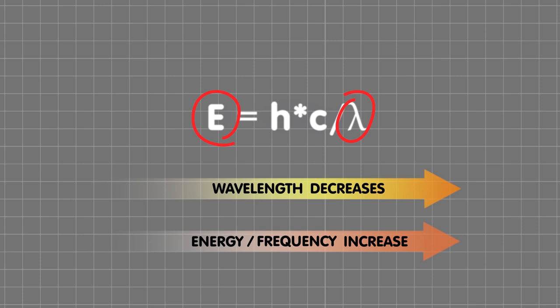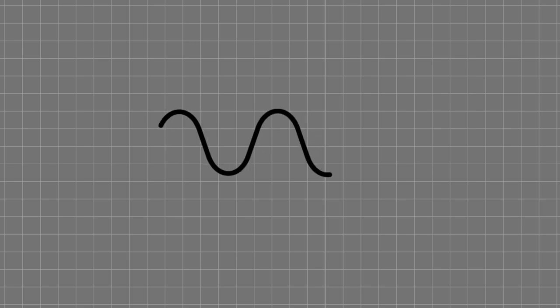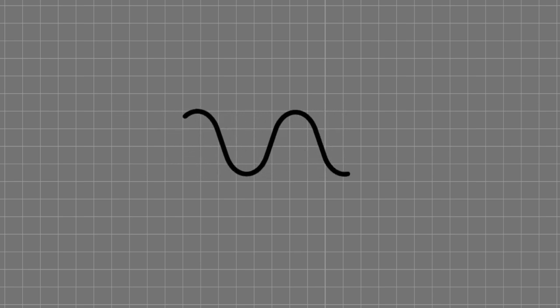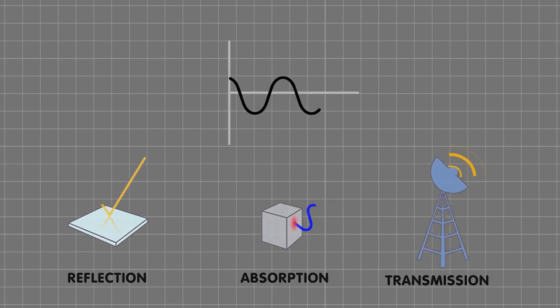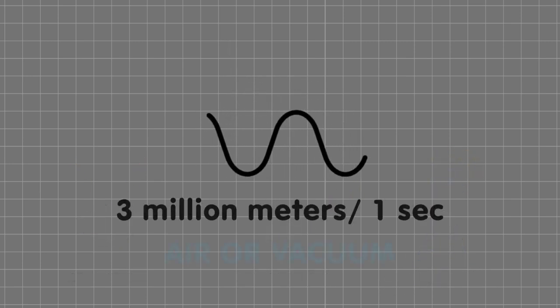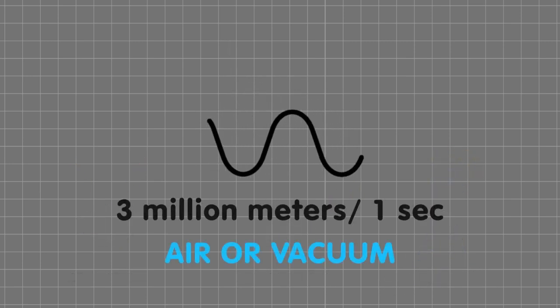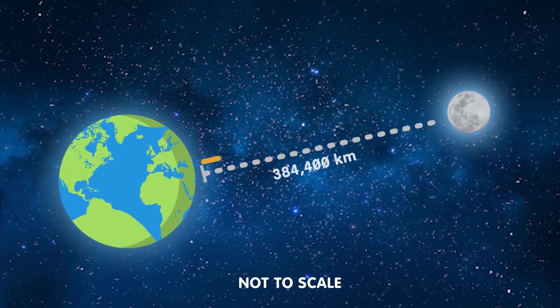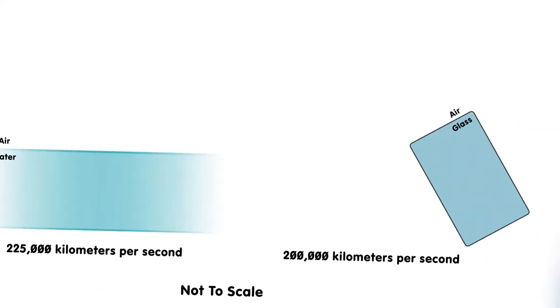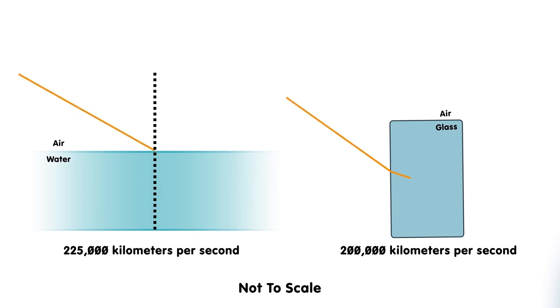If the energy of the waves is higher than visible waves, it can cause damage. Generally, electromagnetic waves are transparent and also have three dual-degree properties: reflection, absorption, and transmission. These waves can travel over 300 million meters per second through the vacuum of space. It takes just around one second. However, depending on the medium, the speed and direction of these waves will change.